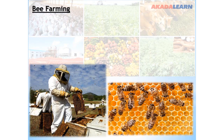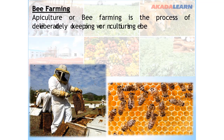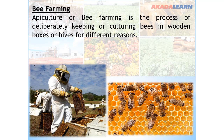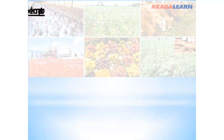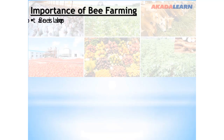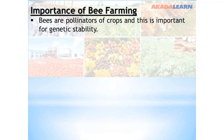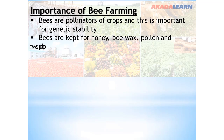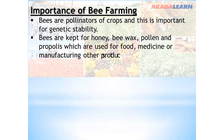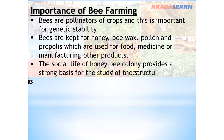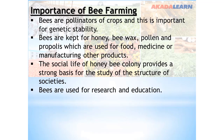Next, we have bee farming. Apiculture or bee farming is a process of deliberately keeping or culturing bees in wooden boxes or hives for different reasons. The importance of bee farming includes: bees are pollinators of crops, which is important for genetic stability. Bees are kept for honey, beeswax, pollen, and propolis, which are used for food, medicine, or manufacturing other products. The social life of the honey bee colony provides a strong basis for the study of the structures of societies, and bees are also used for research and education.